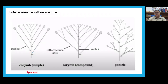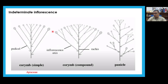Another form is a corymb, which has a longer lateral axis — a pedicel that gets very long — ending in a terminal flower at each branch. New branches produce very long pedicels with terminal flowers, resulting in a flat-topped or round-topped arrangement at the top of the inflorescence. This is commonly found in the family Apiaceae.